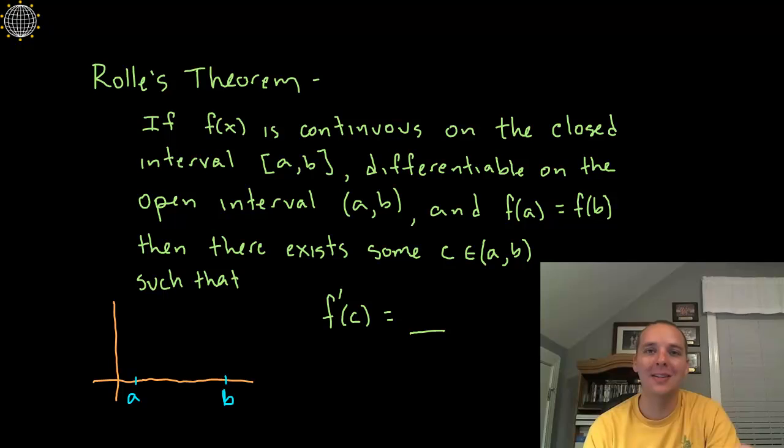It says if your function is continuous, which means there's no breaks in it or holes or asymptotes but you can draw it smoothly without picking up your pencil on a closed interval [a,b], and it's differentiable on the open interval (a,b), and I'll explain what's the difference between open and closed and why it has to be that way.